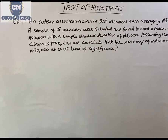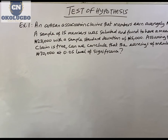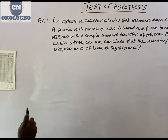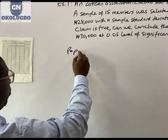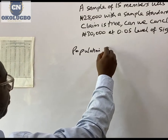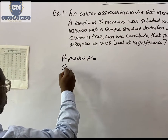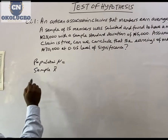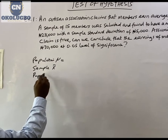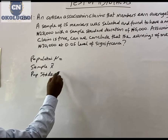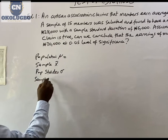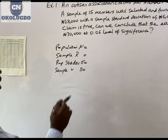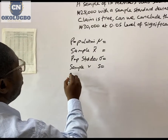When you are presented with a question like this, there are certain variables you have to bring out. We are looking for about four of them: what constitutes the population mean, what constitutes the sample mean, whether we have a population standard deviation or a sample standard deviation, and the number of samples.